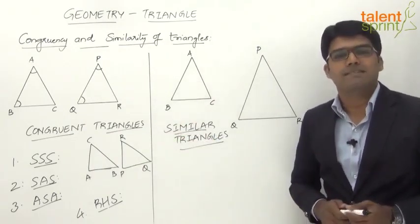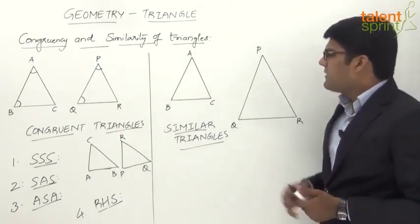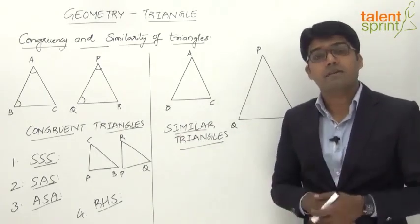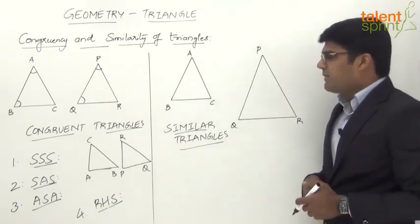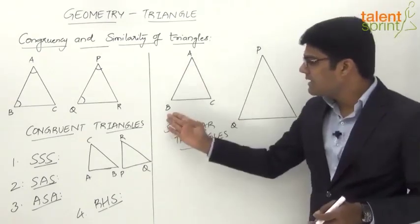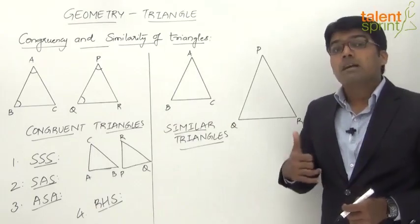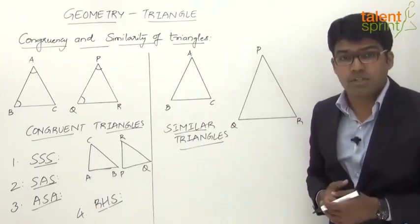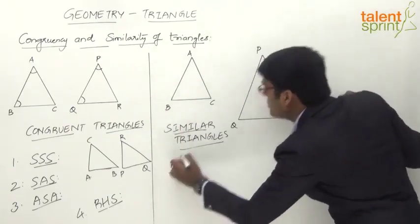Now let us look at similar triangles in more detail. Similar triangles have the same shape but are different in size. The corresponding angles are equal: angle A equals angle P, angle B equals angle Q, and angle C equals angle R. However, the corresponding sides are not equal — instead they are in proportion.